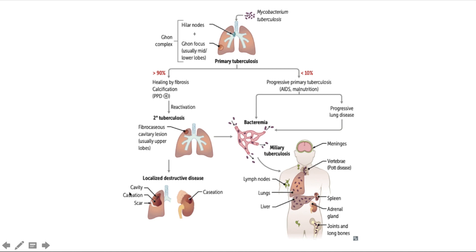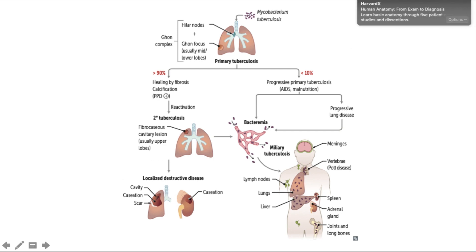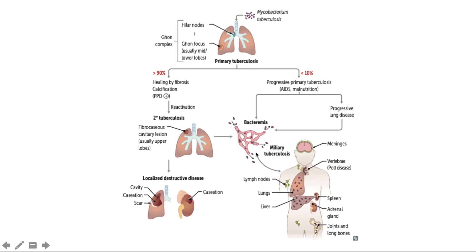In secondary TB, localized destruction causes cavitation, caseation, and scarring. TB can spread to other systemic organs — except nails and hair — TB can happen anywhere. In immunocompromised patients with progressive primary TB, rapid bacterial multiplication leads to hematogenous spread, causing miliary TB — meaning it is in the bloodstream and travels to the brain, lungs, liver, spleen, adrenal glands, joints, and bones.